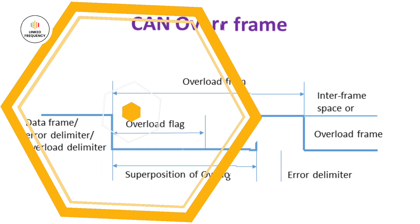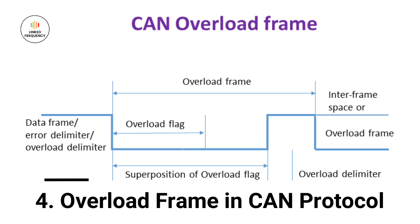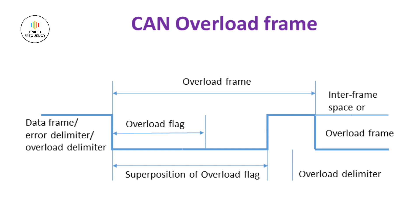Now let's move into the next type of frame, i.e. OverloadFrame. OverloadFrames are used to indicate that a transmitting node is overloaded and cannot process additional messages. The purpose of an overload frame is to temporarily halt the transmission of new messages to the overloaded node. Upon receiving an overload frame, other nodes on the bus delay their message transmission for a specific period of time. This time is known as the overload frame period. It's important to understand that an overload frame does not carry any data payload.